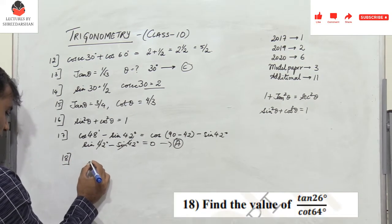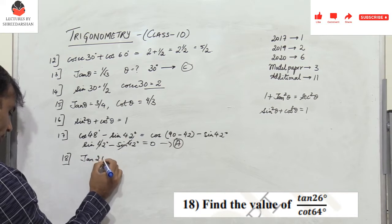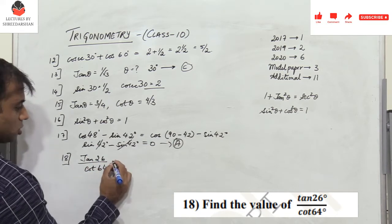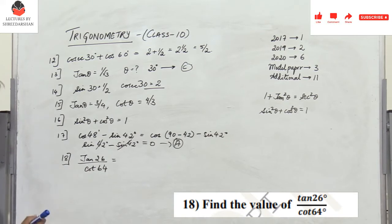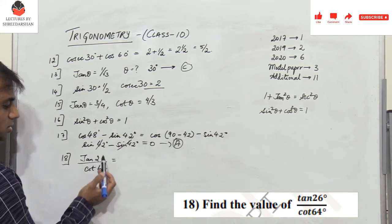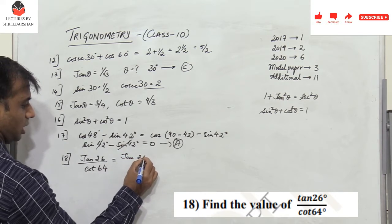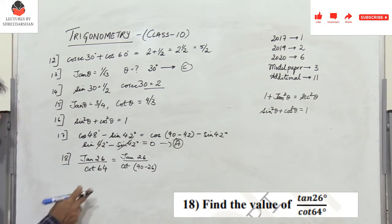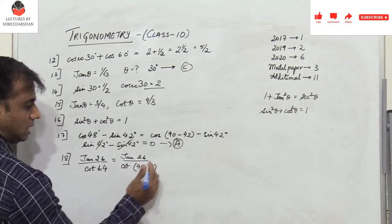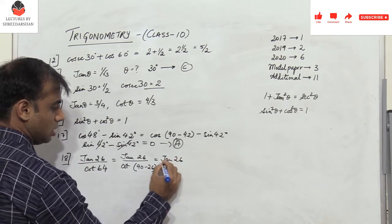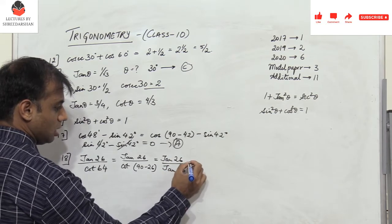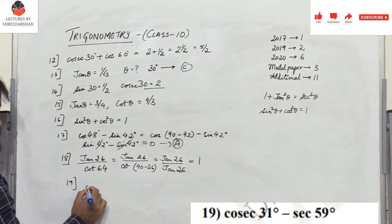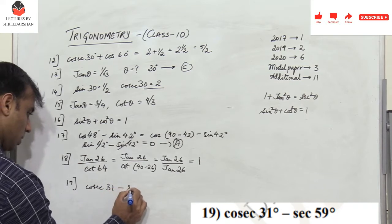Problem 18: tan26 / cot64. We can write cot64° = cot(90° − 26°), and since cot(90° − θ) = tanθ, this becomes tan26 / tan26 = 1.